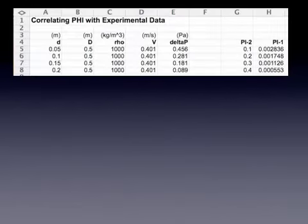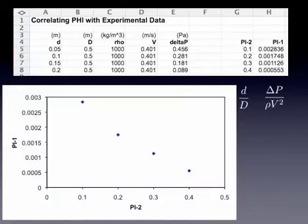We can then plot that data, and I've done this in Excel. So you can see the columns here - little d, big d. So little d varies, we've ran four different tests, big d, rho, and v are all constant through these. And then we've measured four different delta p's, depending on the size of the contraction we used. We can then determine the pi's using these values, and pi 2 is little d over big d, and that's a simple calculation. Pi 1 is delta p over rho v squared, and that's simple enough to calculate as well. We can then plot those two pi's, and we get this kind of relationship.